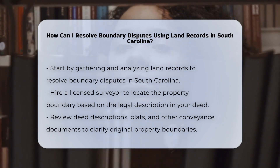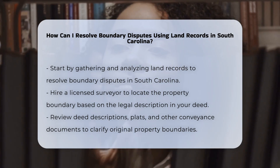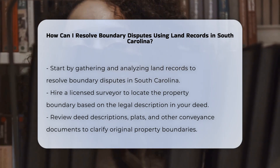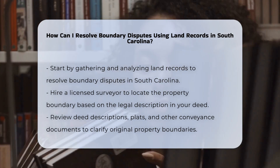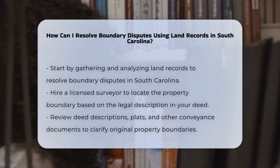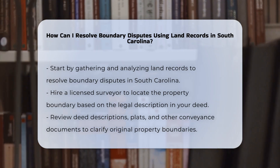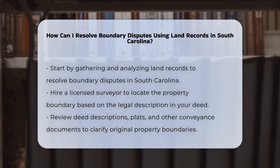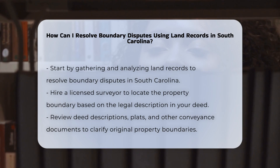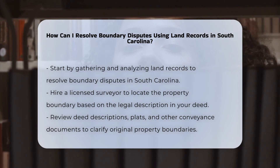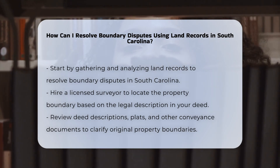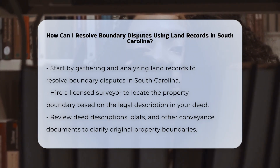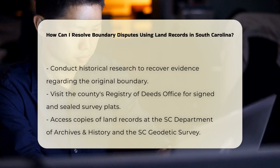Review deed descriptions and plats. Examine the descriptions in deeds, plats, and other modes of conveyance. These documents can often clarify the original intent of the property boundaries. Historical research and extensive land record research are key in recovering evidence for the original boundary.